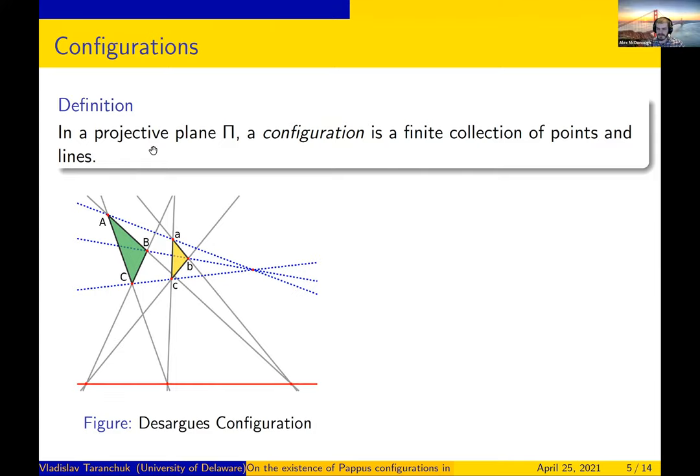In a projective plane a configuration will just be a finite collection of points and lines, and certain configurations are far more important than others. Those of you who have heard about Desargues configurations or Desargues theorem: this configuration here is the Desargues configuration. You take any three blue lines through some single point, you build these corresponding yellow and green triangles. When you extend these lines out and consider these intersections, if these three intersecting points all lie on the same line, we call this a Desargues configuration.